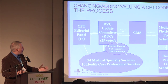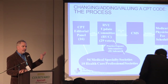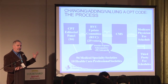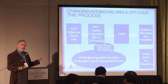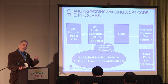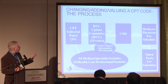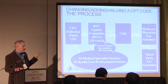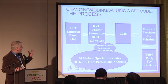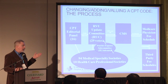So this is how it happens. Basically, the societies come up with an idea, usually approached by industry, sometimes internal to the society, realizing that something we're doing is not valued. It gets proposed to the CPT — the current procedural terminology panel. If it gets through that, then it starts getting valued by the RUC committee.